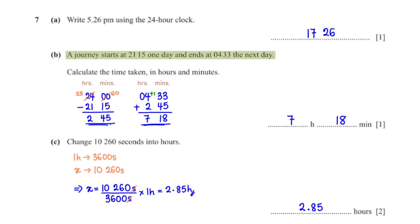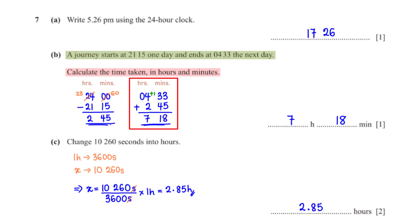A journey starts at 21:15 one day and ends at 04:33 the next day. Calculate the time taken in hours and minutes. First we find the duration from 21:15 to midnight. Under the minute column we can't subtract 15 from 0, so we borrow one hour (60 minutes). 60 − 15 = 45 minutes; 23 − 21 = 2 hours. So 21:15 to midnight is 2 hours 45 minutes.